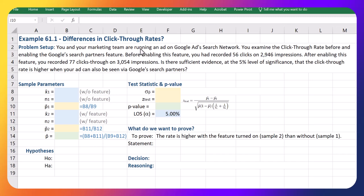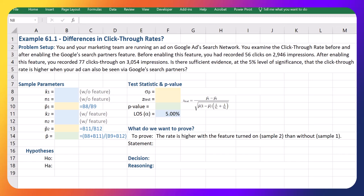Here's the setup: You and your marketing team are running an ad on Google Ads search network. You examine the click-through rate before and after enabling Google's search partners feature. Before enabling this feature, you had recorded 56 clicks on 2,946 impressions. After enabling it, you recorded 77 clicks on 3,054 impressions.